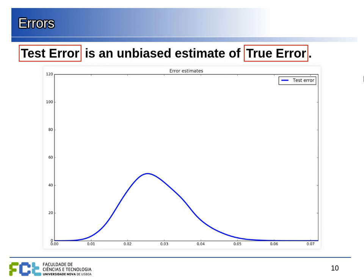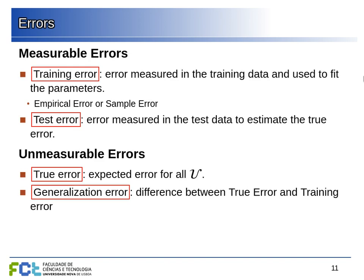An unbiased estimate means the odds of being higher or lower are the same, so if you average over many runs it will tend to converge to the true error. But you are sampling at random from possible errors, since you are splitting the data at random, so you have only one random sample. We can use the test error as an unbiased estimate of the true error.